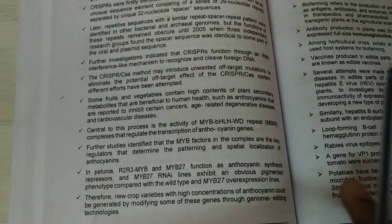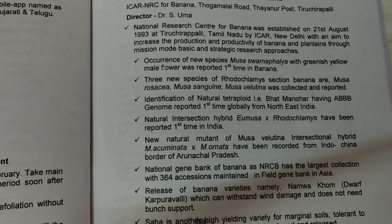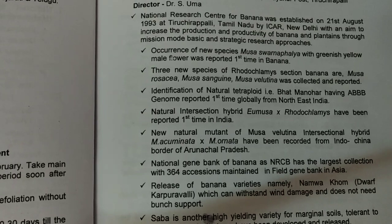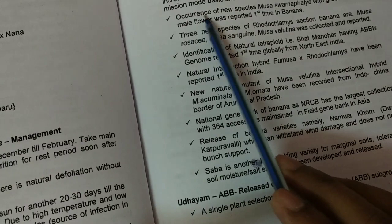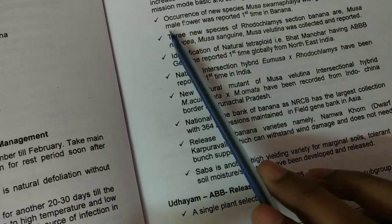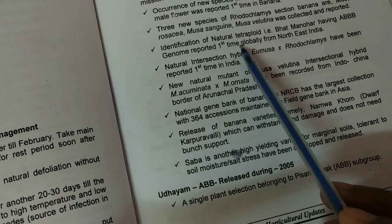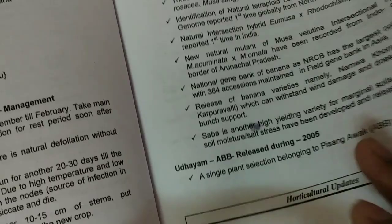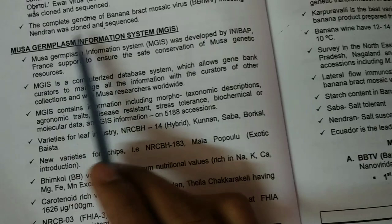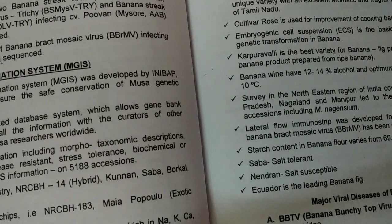If you want to know about the research work going on at different national research centers and directorates, you can easily find it in this book. For example, in the case of banana, a new species — Musa swarna phyla — with greenish-yellow male flowers was reported for the first time. Also, a natural tetraploid called Bhajmanohar with a rare genome was first reported from Northeast India. The MGIS system — Musa Germplasm Information System — with all recent varieties and their genomes is also mentioned here.